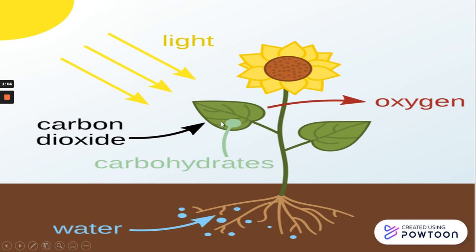الليف بياخد carbon dioxide من الـair. يعني دلوقتي الليف بقى فيه water وفيه carbon dioxide. وقلنا عشان النبات يعيش بيحتاج حاجة مهمة قوي زي sunlight — فيه هنا light نازل على الليف. اللايت ده بيدي للليف energy — بيديها طاقة تبدأ تصنع الاكل.